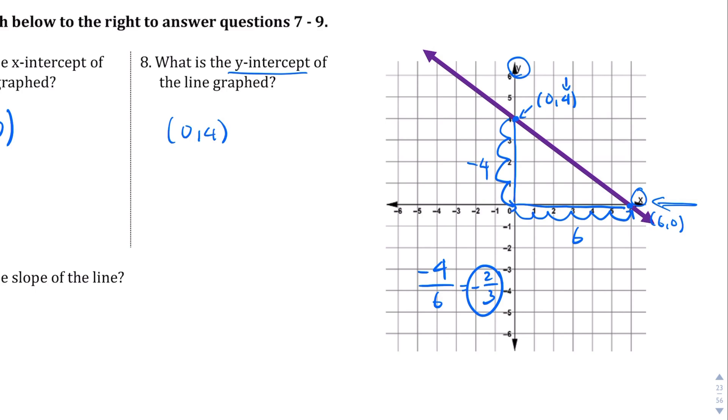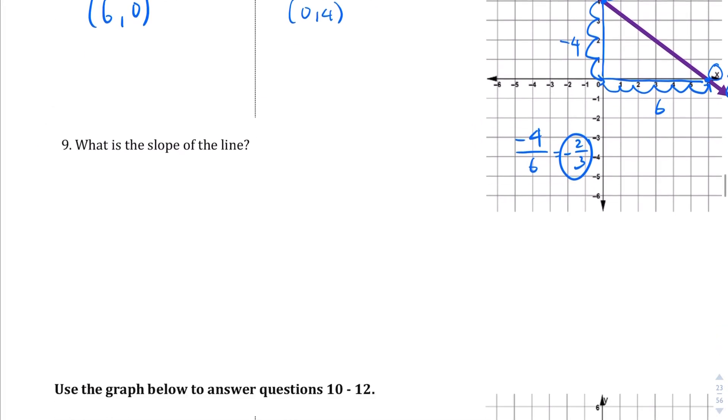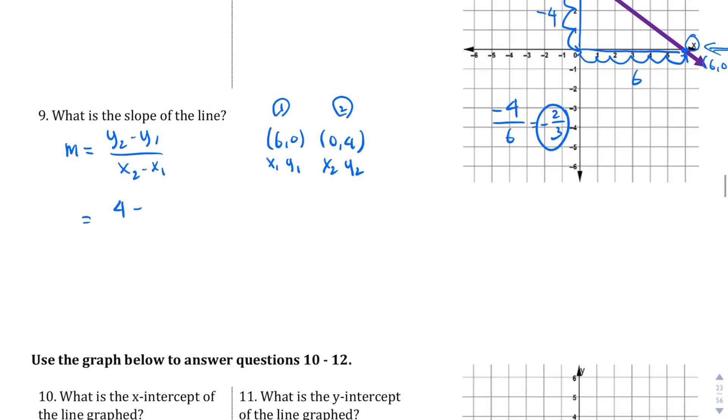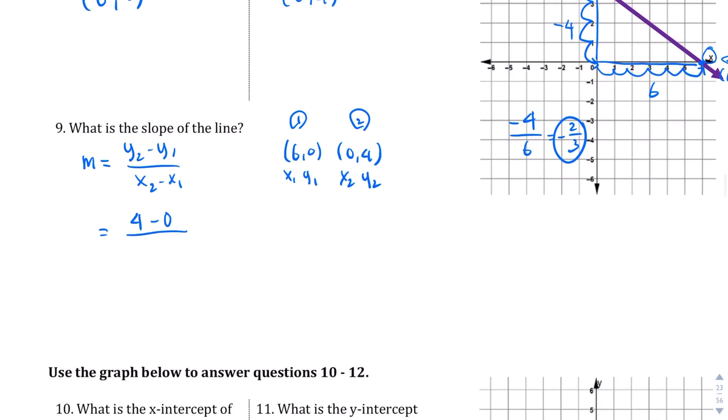Now we're going to do this algebraically and hopefully we'll get the same answer. We're going to use the intercepts to find the slope. Let's refer back to the slope formula here. We're going to take y2 minus y1 over x2 minus x1. And the points that we had were 6, 0 and 0, 4. So let's label these. I'm going to call this point 1 and point 2. So therefore this is going to be x1, y1, and then x2 and y2.